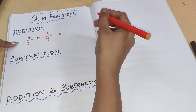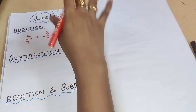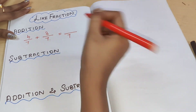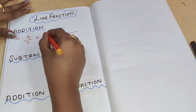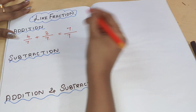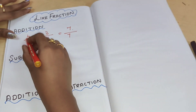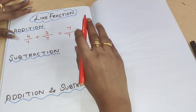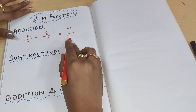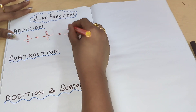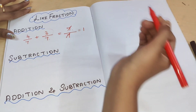Since it is a like fraction, in the answer the denominator would also be the same — that is 7. So 4 plus 3, with 7 as the denominator. Only for the numerator do we apply addition; for the denominator, you can write it directly. Both 7s will cancel and the answer is 1.